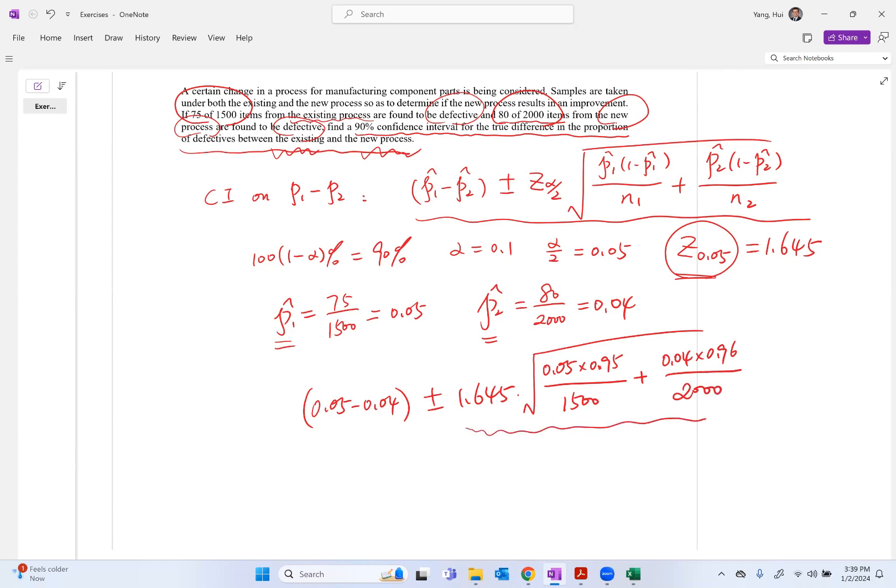So this value will equal to 0.0117 and this is 0.01.